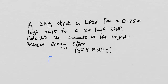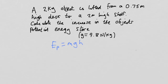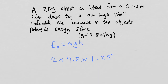Gravitational potential energy equals mass times gravitational field strength times height. Mass is 2 kilograms, gravitational field strength is 9.8 newtons per kilogram. The height we've lifted it is from 0.75 meters all the way up to 2 meters, so the change in height is 1.25 meters. So 2 times 9.8 times 1.25 gives you an answer of 24.5 joules — that's the increase in the object's gravitational potential energy store.